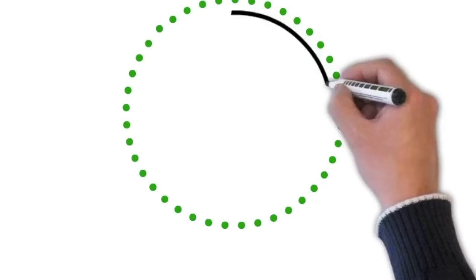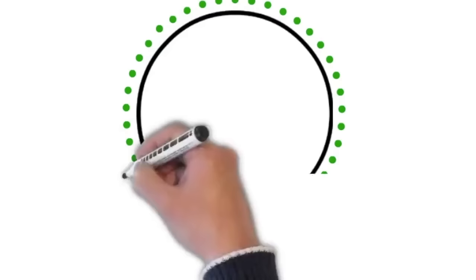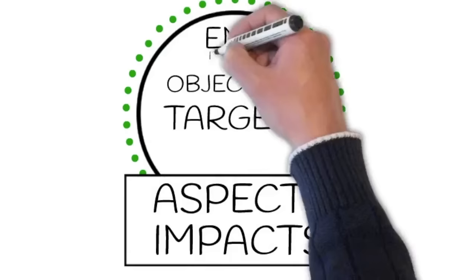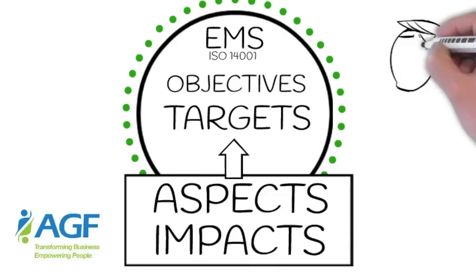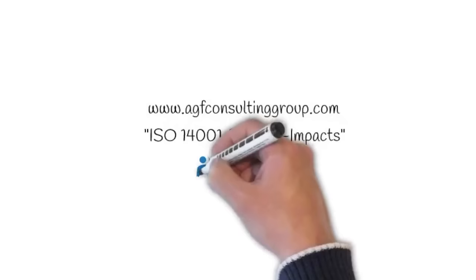Ultimately, your aspects-impacts register will help you establish your EMS objectives and targets. An EMS can often be more complicated than needed, and the key to any effective EMS is getting the environmental aspects right at the very beginning. Identifying the environmental aspects properly will not only save you time, but also enable you to achieve great benefits with your EMS once it is implemented. For more information, visit our website at www.agfconsultinggroup.com.